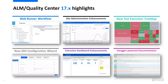The new test execution tree map enables you to visualize the test execution results of your test sets. The new SSO configuration wizard enables you to set up SSO authentication by following step-by-step on-screen guidance. The executive dashboard of KPIs is now supporting requirements and test instances. And the Swagger Power description format provides more readable documentation for on-premises and SaaS site administration REST APIs.